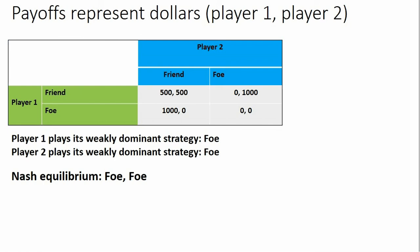We could ask each player, hey, you're currently playing foe and player two's playing foe. Would you like to change your strategy? And neither player would like to change your strategy. Their payoffs, given the strategy of the other player currently playing foe, would not increase by playing friend.